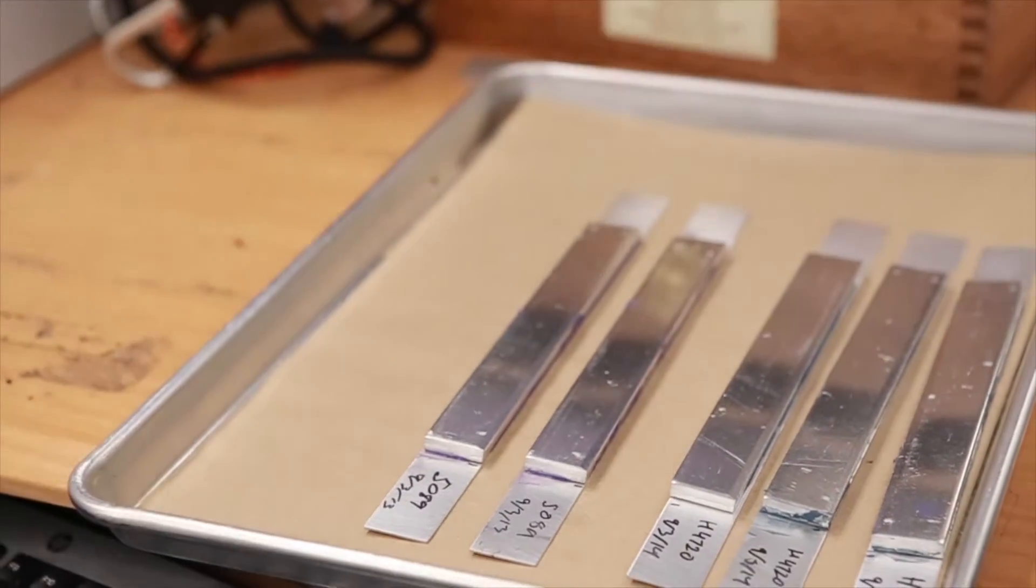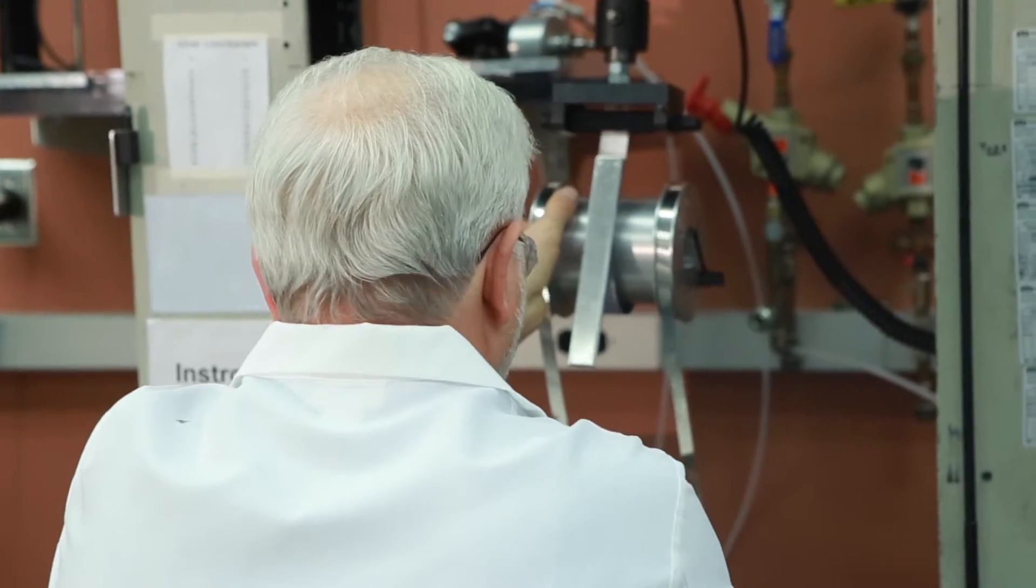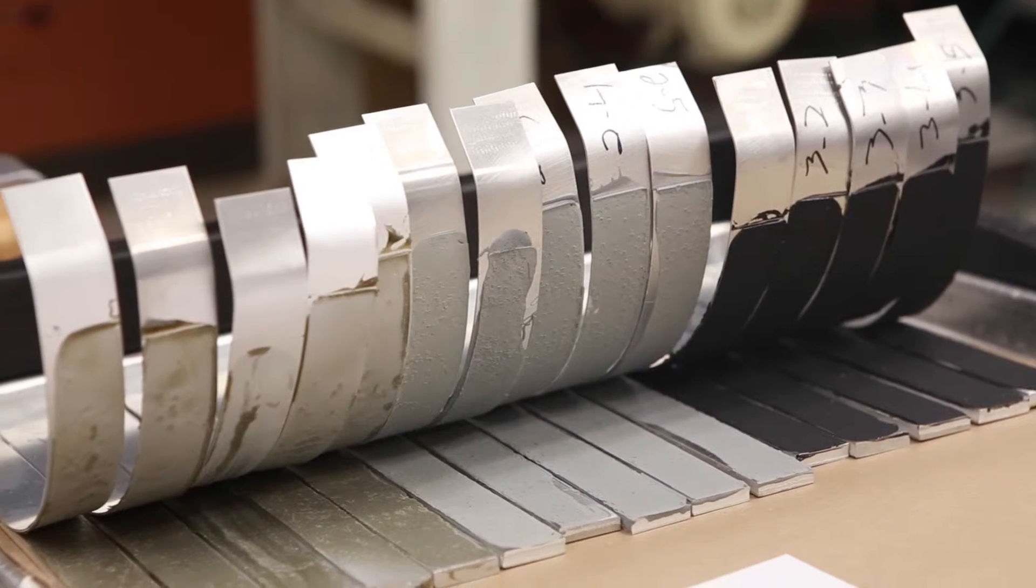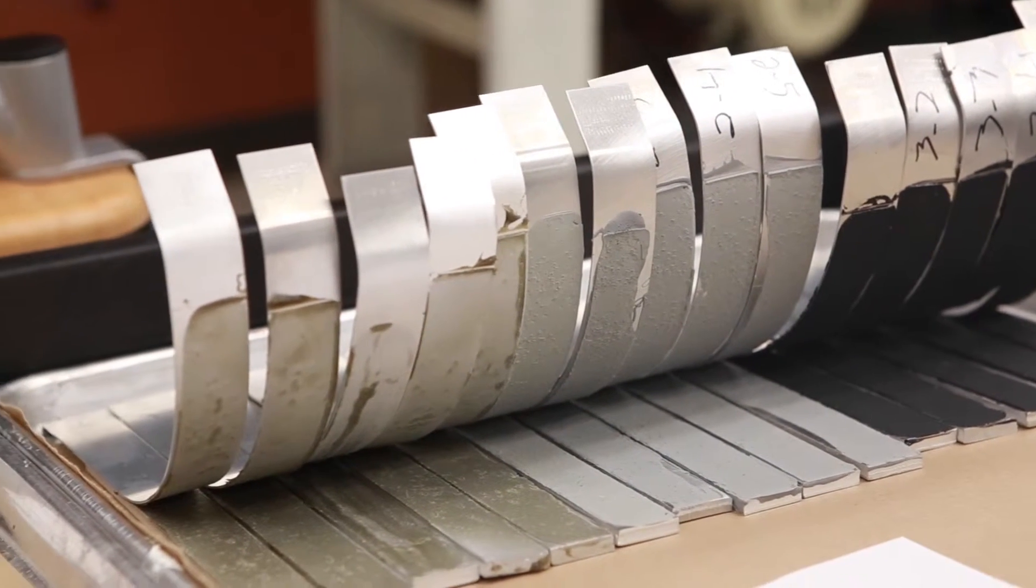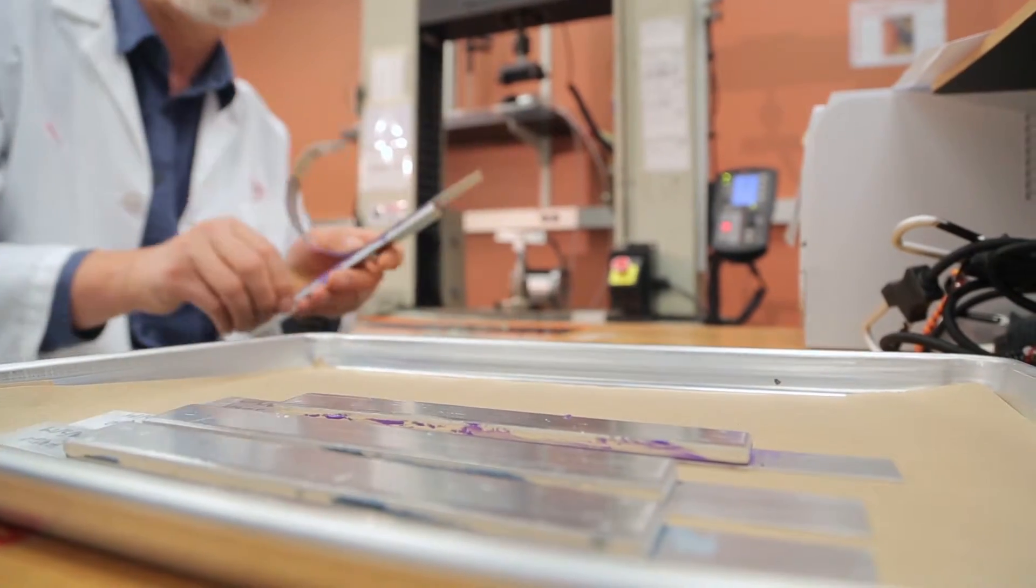Next we are going to test peel strength. Peel tests measure the average force required to fracture the adhesive bond between flexible materials when pulled at a specified angle. These tests are important for describing assemblies where the bond is subjected to peel loads. All of the applied load is concentrated on the leading edge of the adhesive rather than across the entire bonded area.